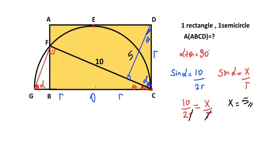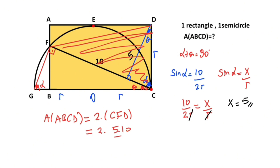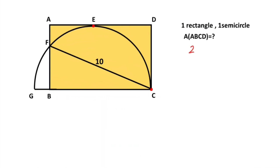Next step: if we connect point F and point D, notice that the area of this triangle is equal to half the area of the rectangle. Therefore, the area of ABCD equals two times the area of triangle CFD. So the rectangle area equals two times five times ten over two, giving the area of the rectangle equal to 50 square units. That was the first method.